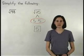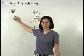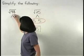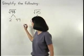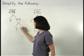The same technique can be used to simplify the square root of 98. Notice that 98 factors as 2 times 49, and 49 factors as 7 times 7.